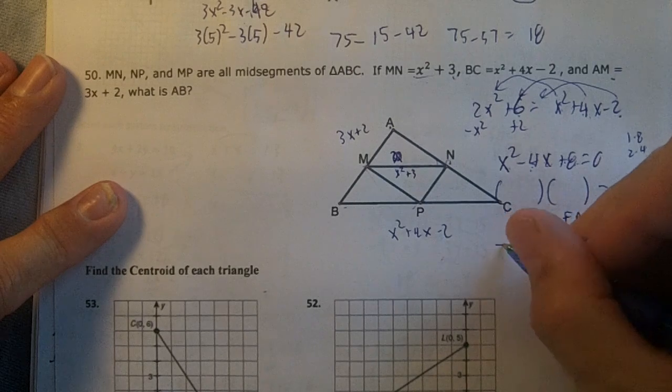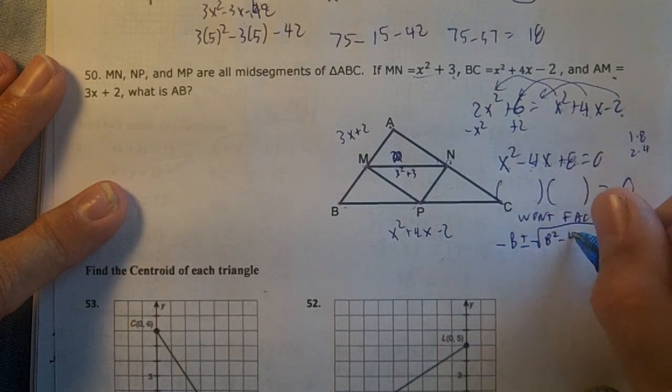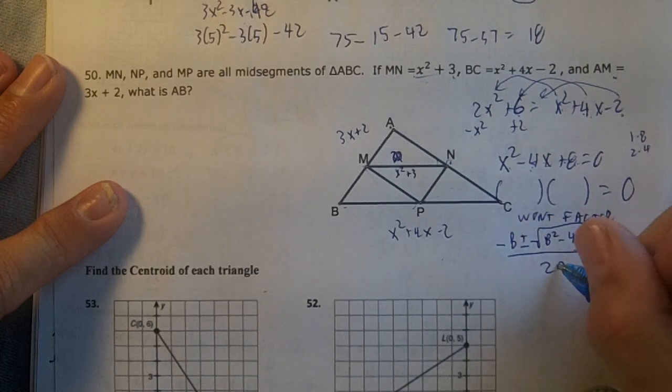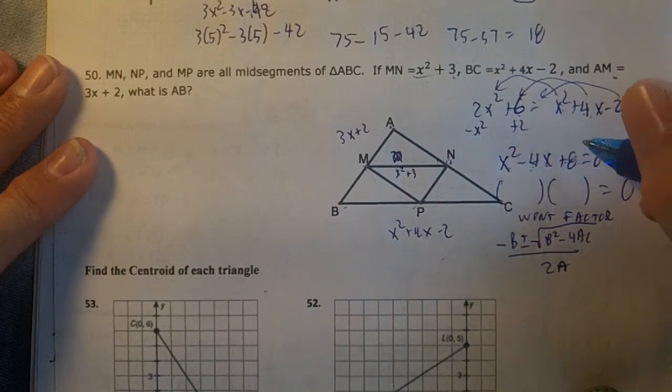We'll use the quadratic formula: -b ± √(b² - 4ac) / 2a. This is going to be heavy duty.